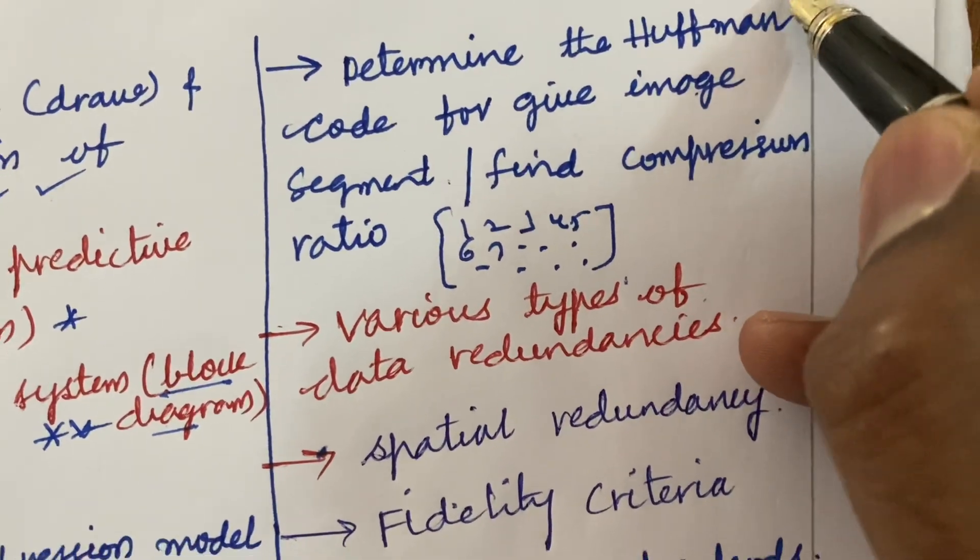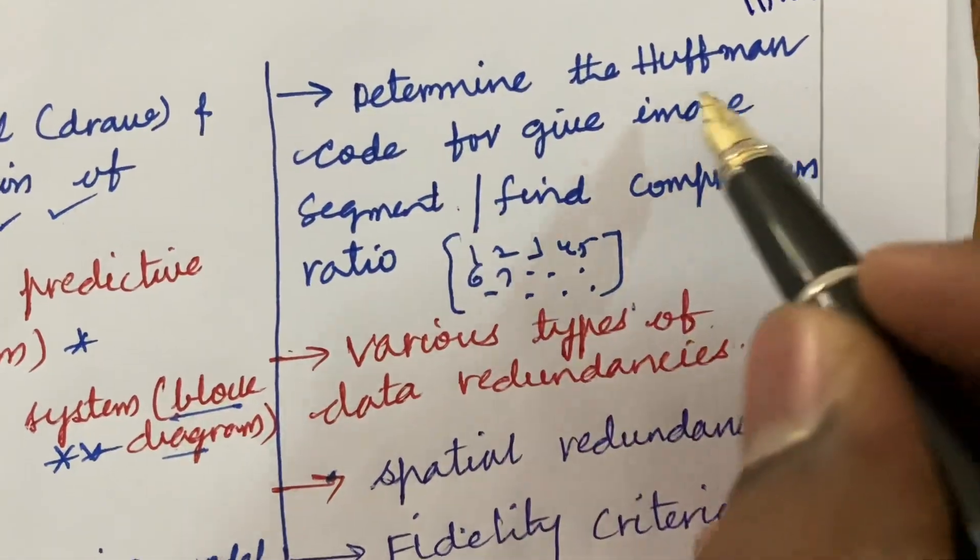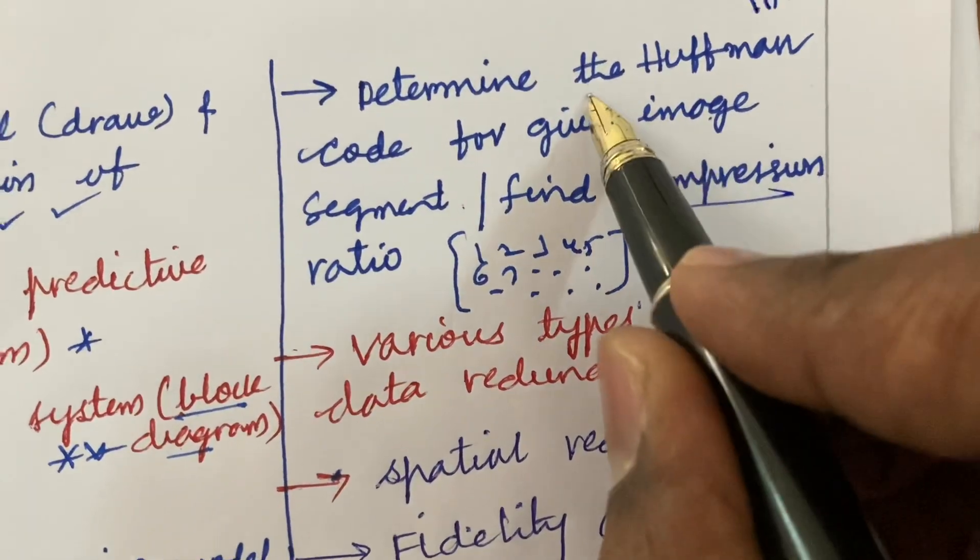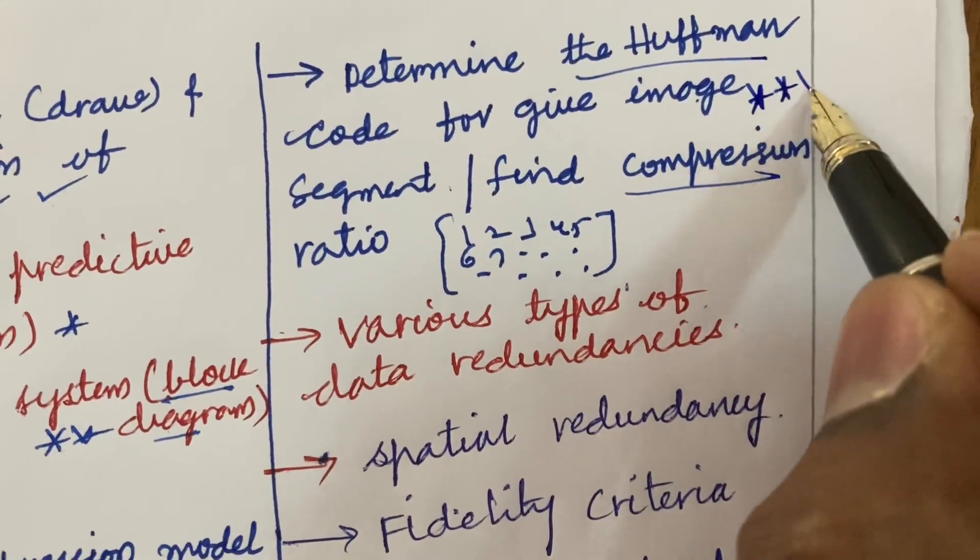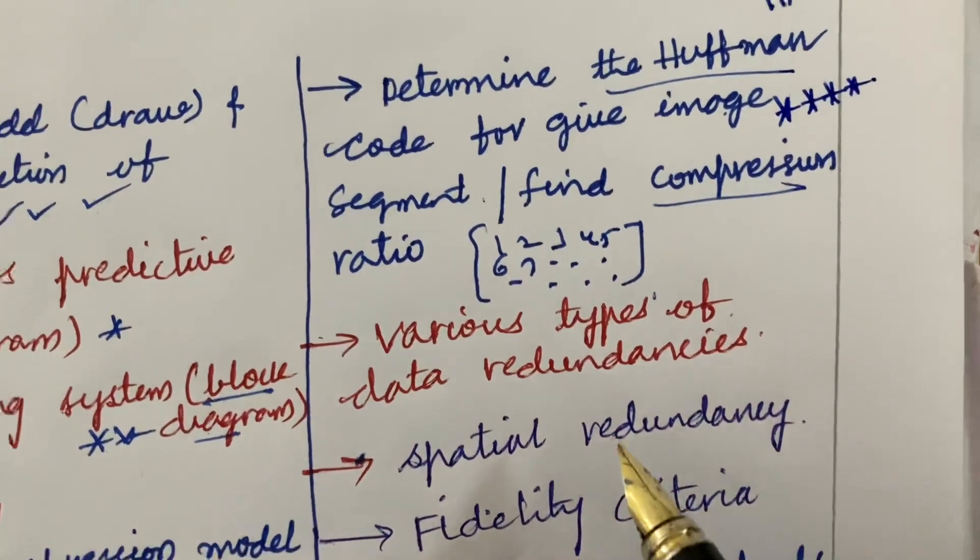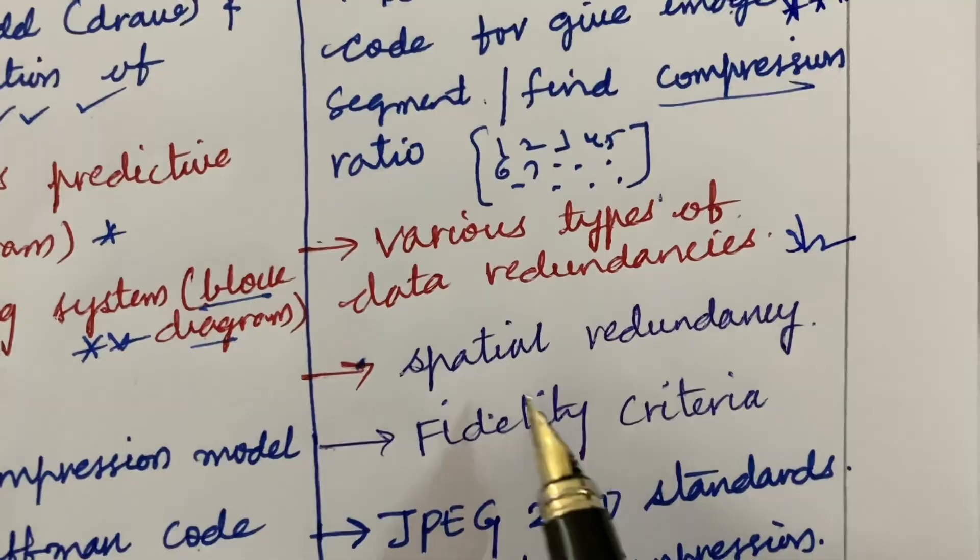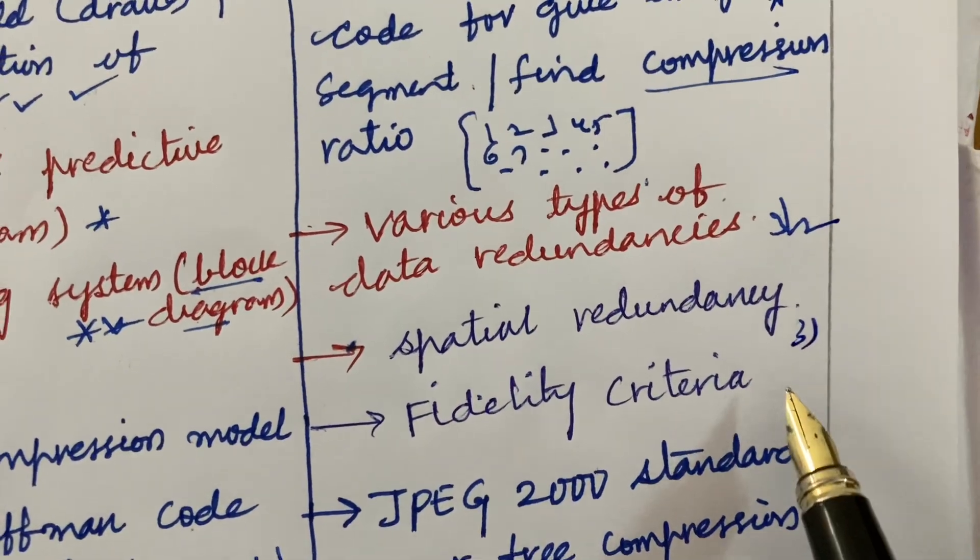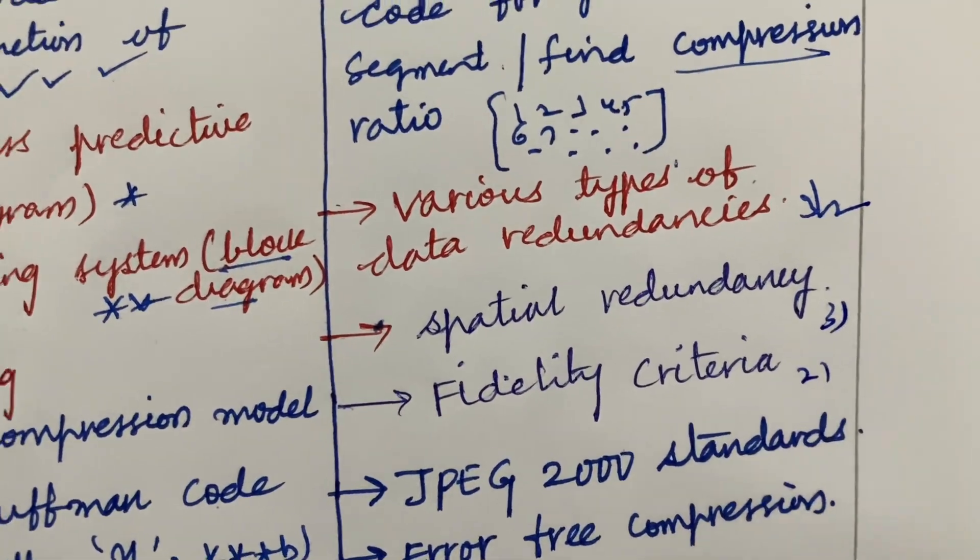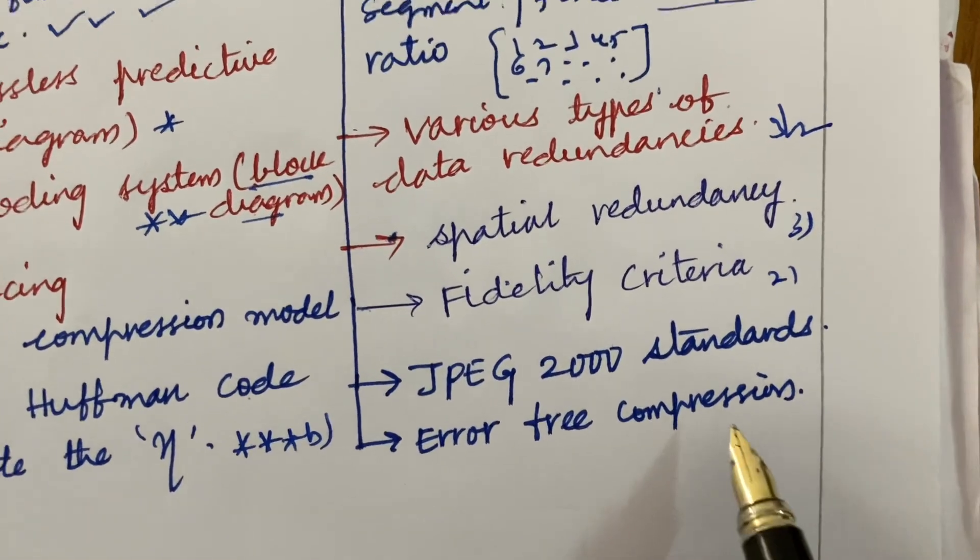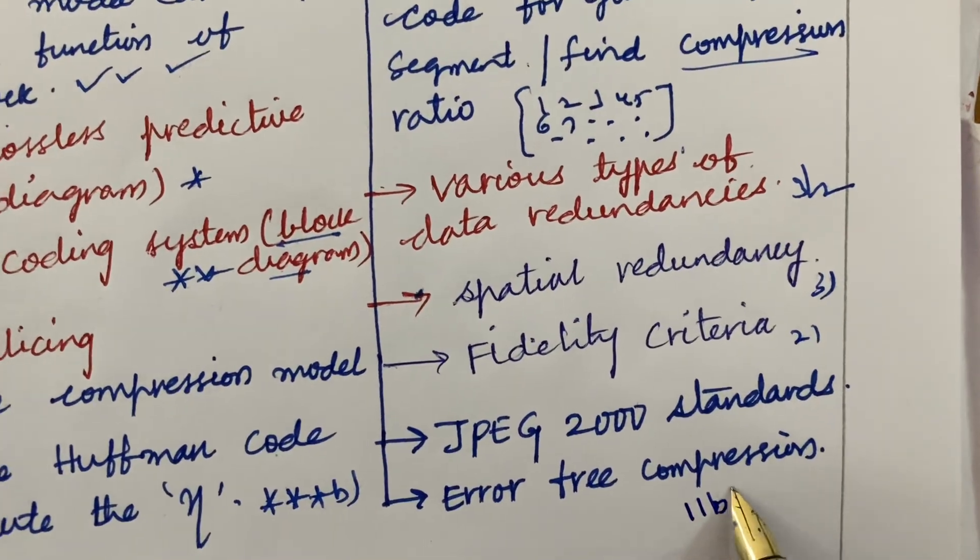The next question I am going to talk is 11A and 11B. Determine the Huffman code for a given image segment and find the compression ratio. Such type of question is said to be one of the very very important and topmost questions. Various types of data redundancies may be 3 mark, 2 mark question and the spatial redundancy is also a 3 mark and fidelity criteria is a 2 mark question. JPEG 2000 standards and error-free compression may be 11B question in your question paper.